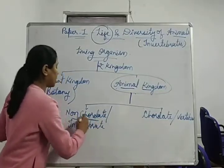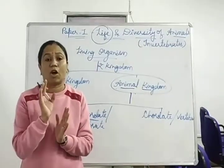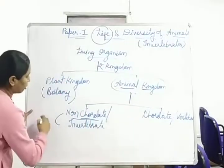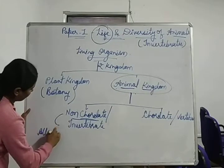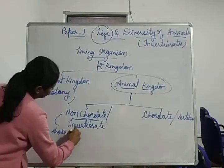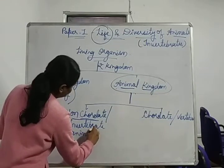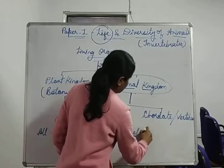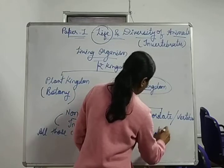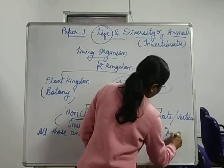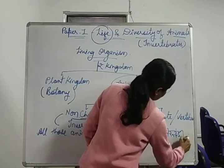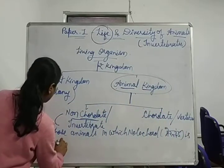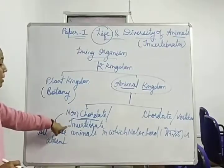Non-cordate animals — that means akashiruki animals — those in which notochord is absent. They are included in the group non-cordata, or we can say invertebrata.